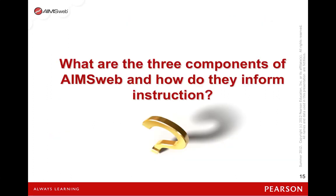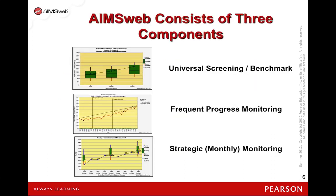So what are the three components of AIMSweb, and how do they help us inform instruction? AIMSweb has three components: the universal screener given three times per year, the frequent progress monitoring given weekly to intensive needs students, and more strategic monitoring for those students who are either being exited from intervention or who are not in a formal intervention but may need additional instructional support.